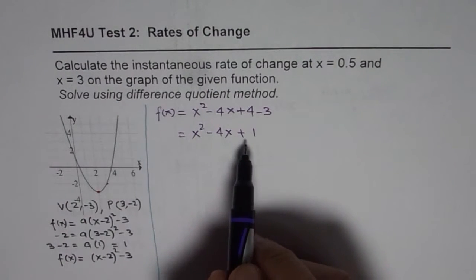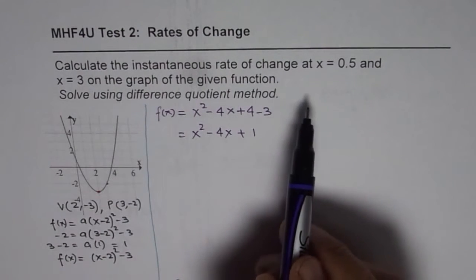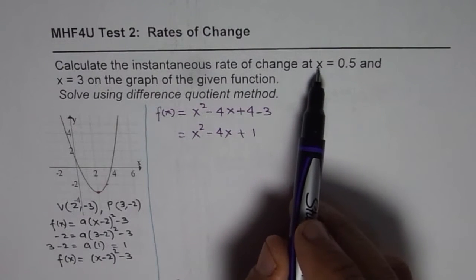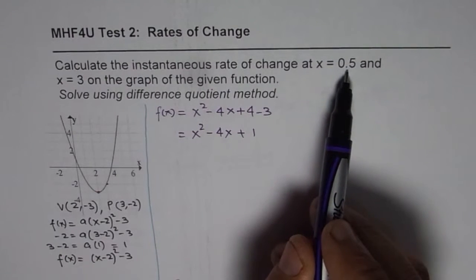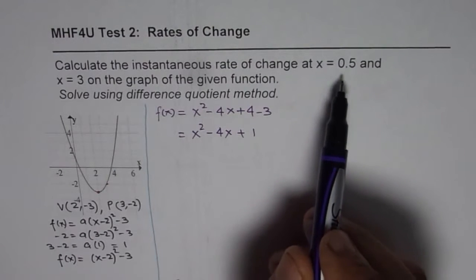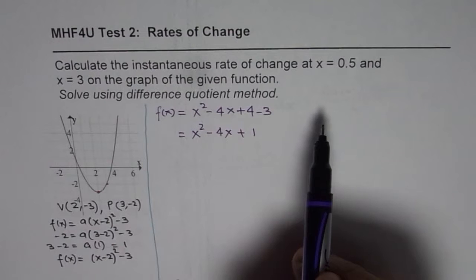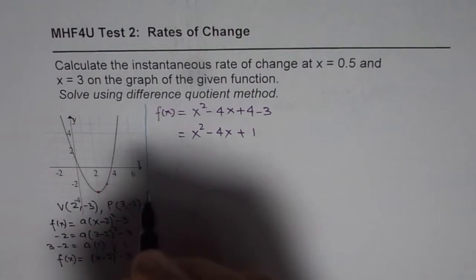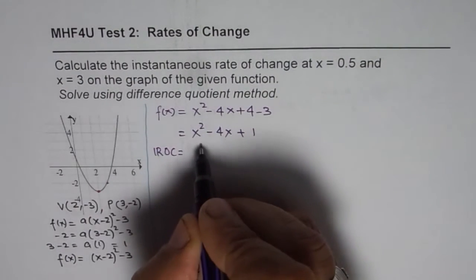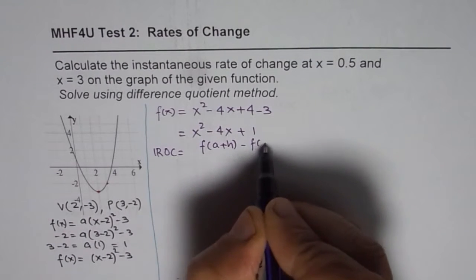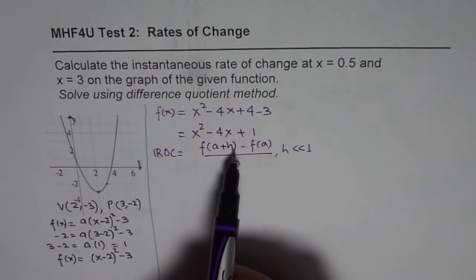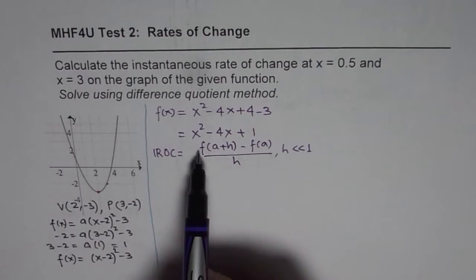Now that we have the equation of the function we can easily use the difference quotient method to find the instantaneous rate of change at the given points. One method is an approximate approach — consider a point very close to 0.5, like 0.501, and find the rate of change. The other method is to find a general formula and then plug in the points. Let me teach you the general formula: instantaneous rate of change equals f(a + h) minus f(a) over h, where h is very, very small. Here f(a + h) is found by replacing x with a + h.